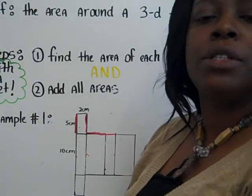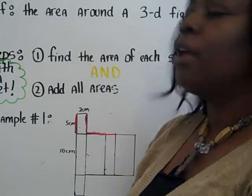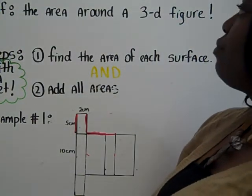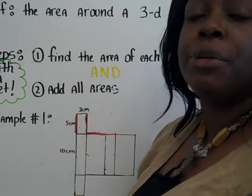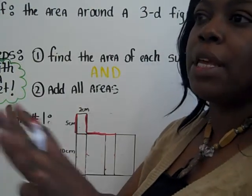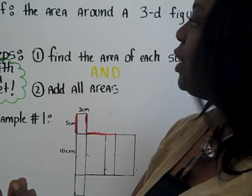Hello. Today we are going to talk about surface area. First, the definition. Surface area is the area that surrounds or is around a three-dimensional figure. So when we're trying to find surface area, we need to be thinking about the outside faces, the area of all those faces.